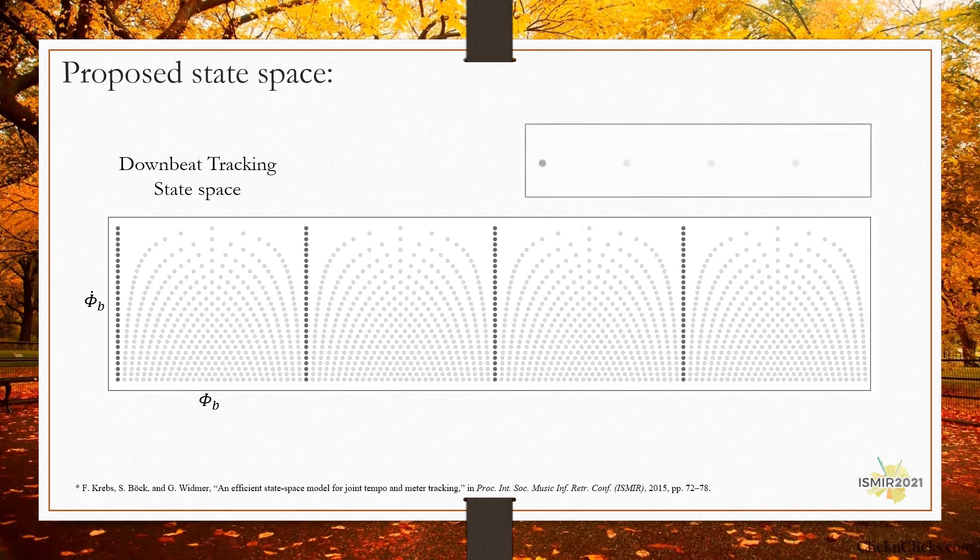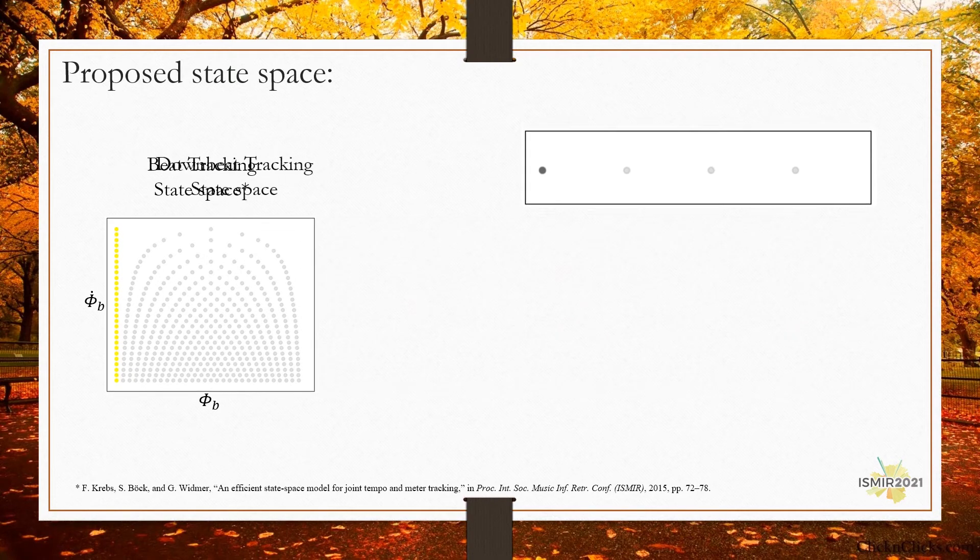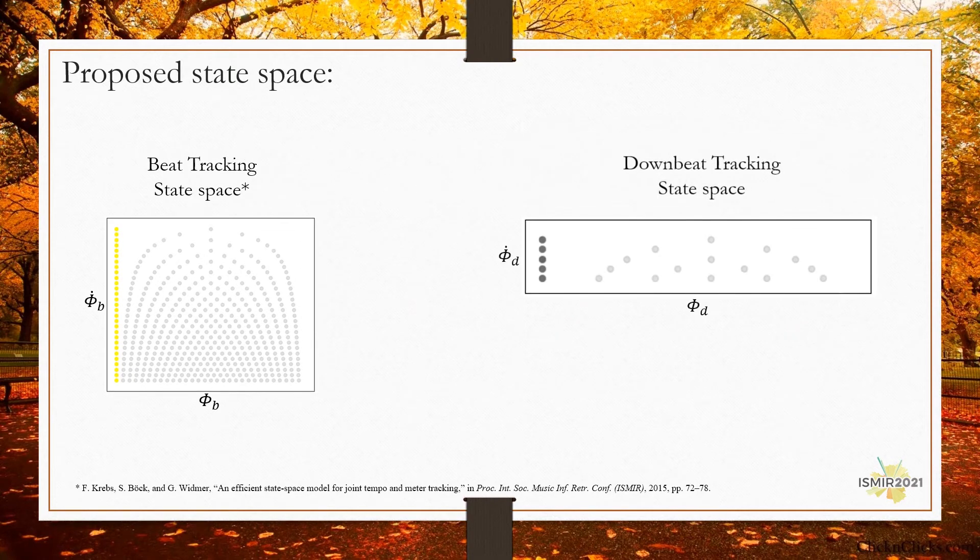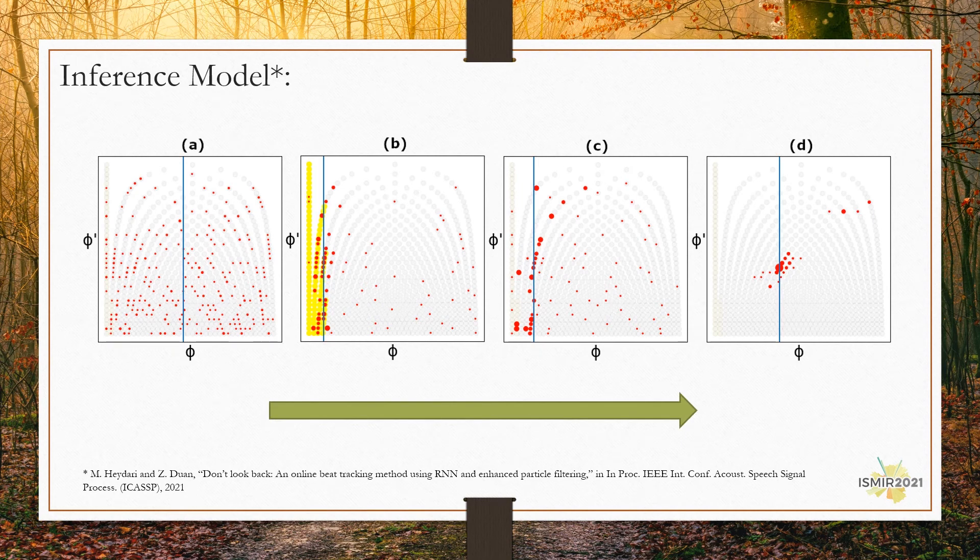We instead utilize few states each to represent a beat area within a bar. It eliminates the need for multiple beat concatenation. Moreover, it lets us extend it to represent several bar lengths and provide dynamic meter tracking. Hence, the downbeat state-space comprises two axes, the meter and the beat phase within the bar. The inference model is the same as our previous down-look-back model. The particles are distributed randomly and by the time and within a recursive process converge to the correct location in the state-space.